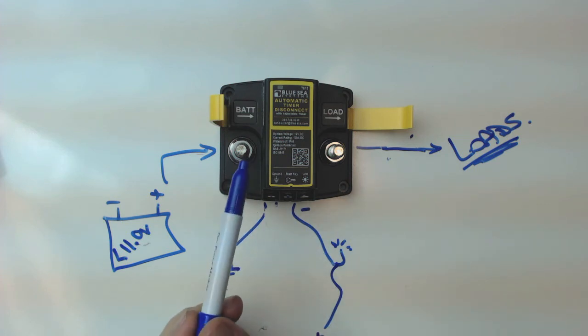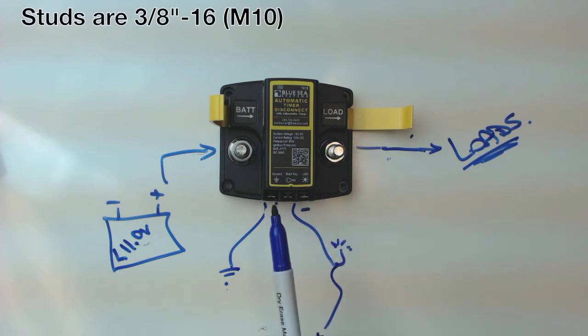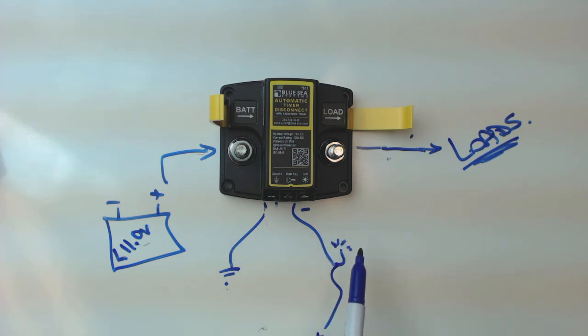So you can put large gauge wires on with proper ring terminals. A lot of timers just use a little push-in wire with a small screw terminal, which tends to fall out if they're not done just precisely right, and the wire not strain relieved properly. So this one has a really nice big terminal for both the battery and the load.